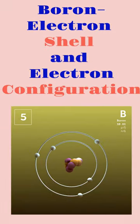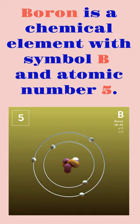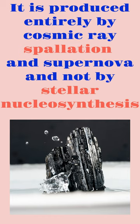Boron. Electron Shell and Electron Configuration. Boron is a chemical element with symbol B and atomic number 5. It is produced entirely by cosmic ray spallation and supernova, and not by stellar nucleosynthesis.